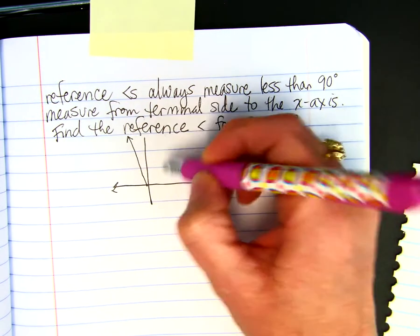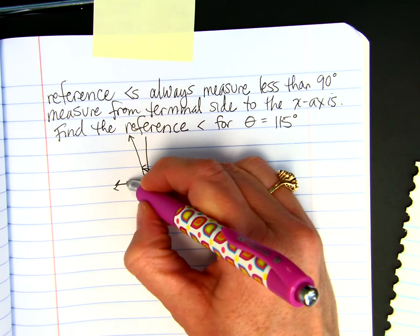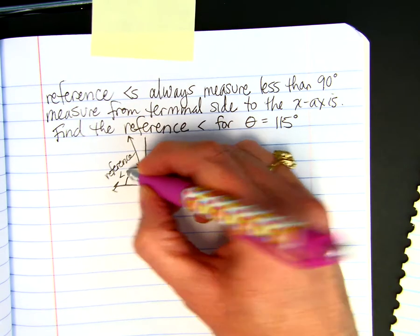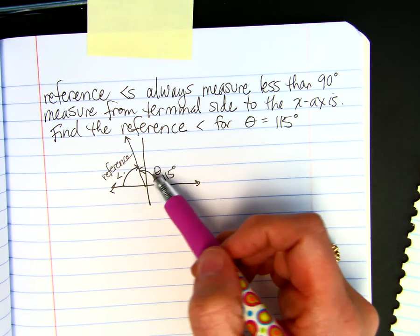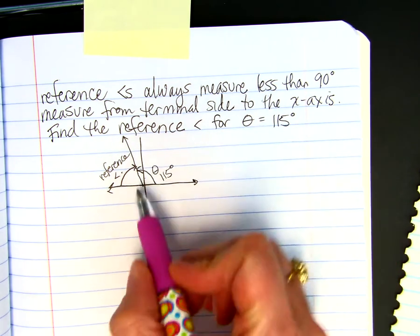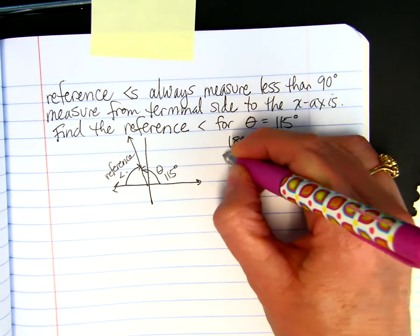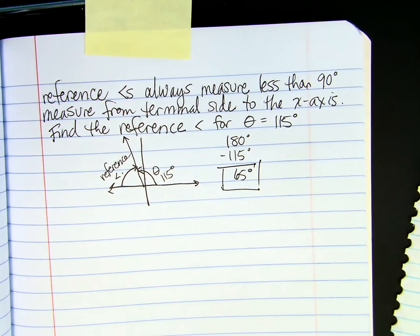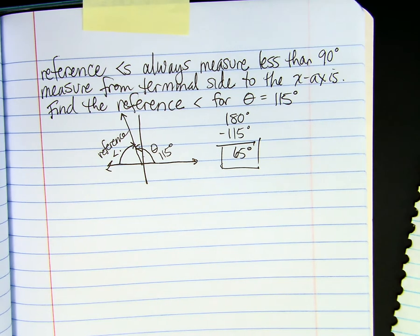So if I draw my 115 degrees, I go right about there. My reference angle is how far away from the X axis. So this is the reference angle. You could do 180 minus 115. You could do 90 minus 25, because you know that this is 25 over the 90 degree mark. So if you did the 180 degrees minus 115, you would get 65 degrees. So that would be your reference angle. It's always positive. I'm pretty positive.